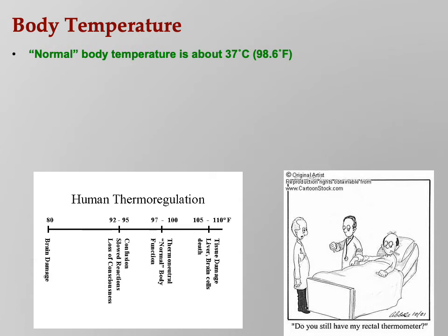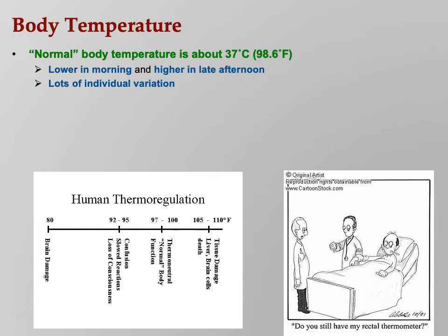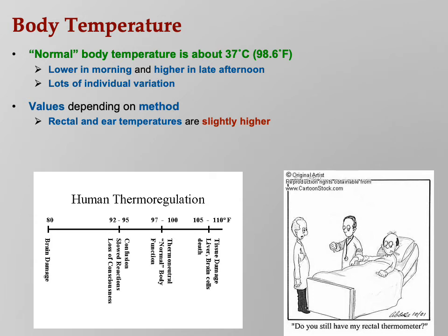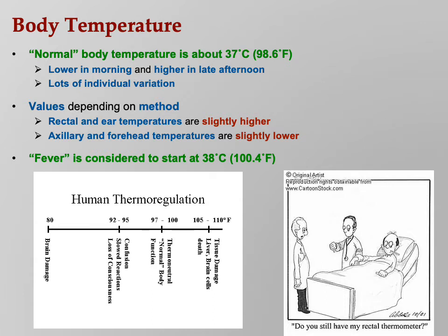Normal body temperature is 37 degrees Celsius, or 98.6 Fahrenheit. It's lower in the morning and higher in the afternoon — body temperature changes throughout the day and differs from person to person. Temperature values also depend on the measurement method: rectal and ear temperatures are usually slightly higher, while axillary and forehead readings are usually lower. Fever officially starts at 38 degrees Celsius, which converts to 100.4 Fahrenheit.